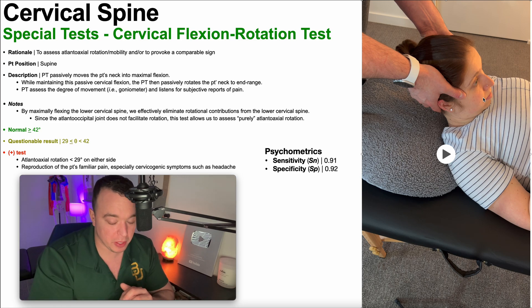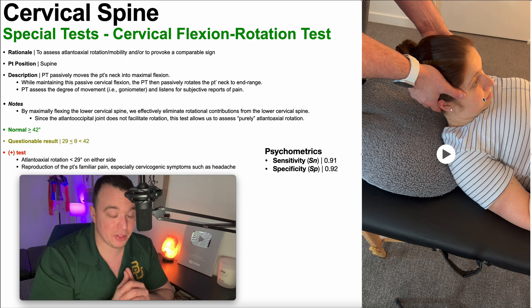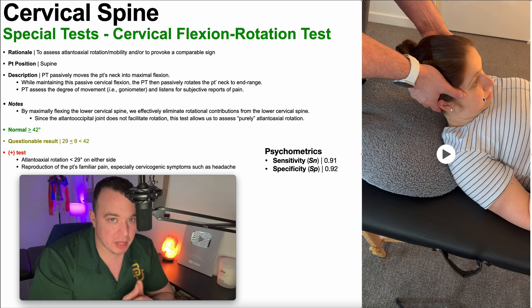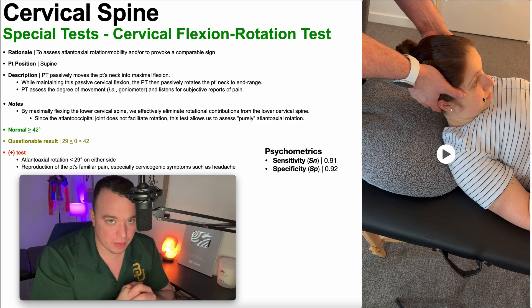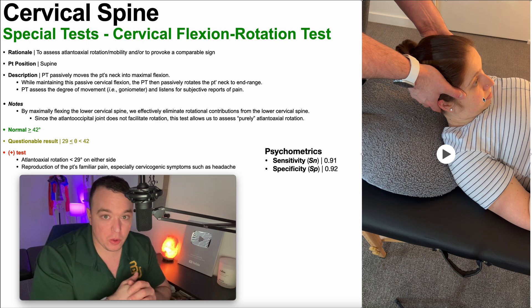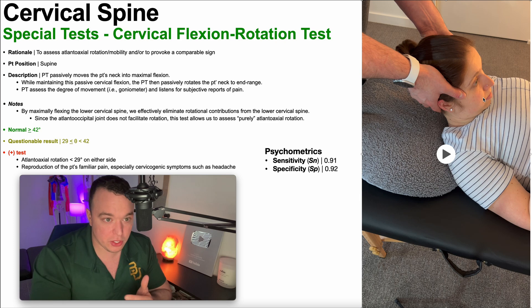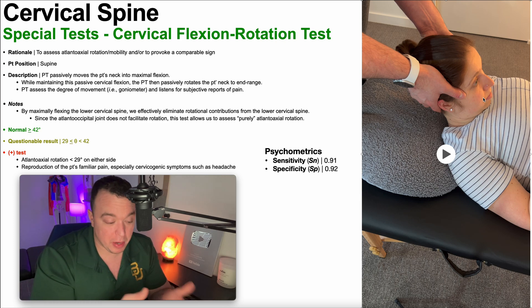The important one is the transverse plane. So if I were to then passively rotate the head in this position, the lower cervical spine will not be able to participate in that rotation by Freyette's Third Law. And so any rotation that I'm now able to obtain is coming from the upper cervical spine — really the atlanoaxial joint.